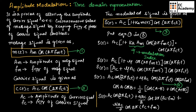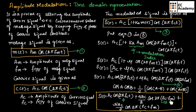This is the final expression for amplitude modulation in time domain representation. In this expression, the first term ac·cos(2π·fc·t) is the carrier signal, the second term is the lower sideband of the AM signal, and the third term is the upper sideband of the AM signal.